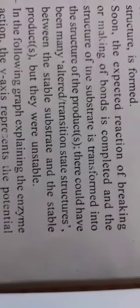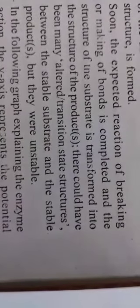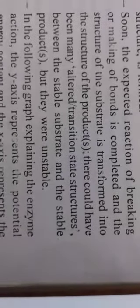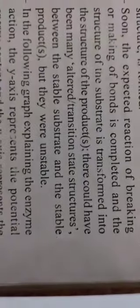The substrate transforms into the product. Whatever it needs to make will be formed. There could have been many altered transition state structures. In between, many structures are formed and broken. Between the stable substrate and the stable product, many substances are formed, but all those substances are unstable. Unstable means they form and immediately break apart.